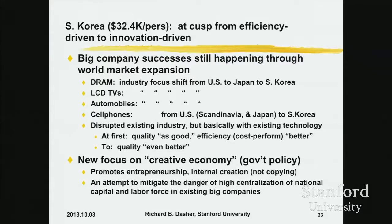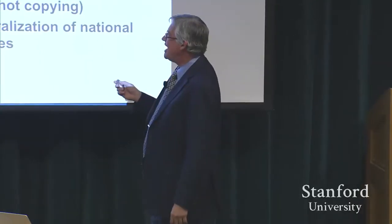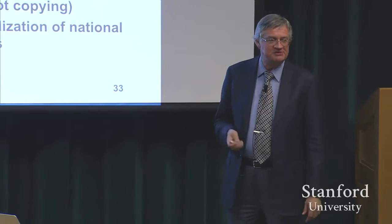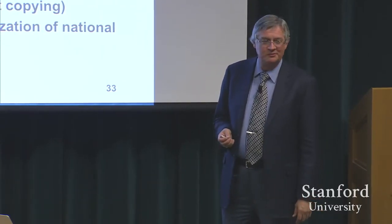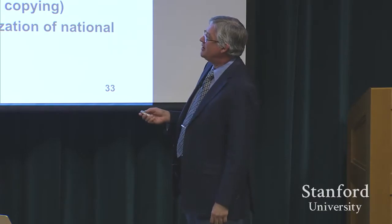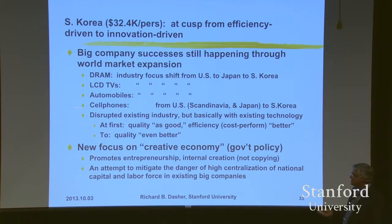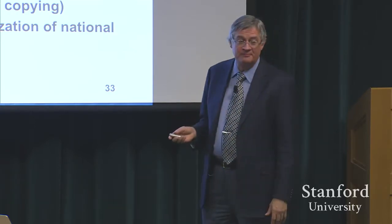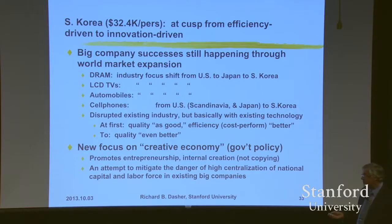The Japanese cell phone makers never really got outside the Japanese markets very well. But all of this is going to Samsung and LG — when you are in Beijing, you see advertisements for Samsung phones heavily. Basically this did disrupt an existing industry, but they did it with an existing technology — it's a classic efficiency play. At the beginning, Korean products were as good but their cost performance was better, and as the companies made money, to their credit, their performance is even better. This is great for a stage-two economy.